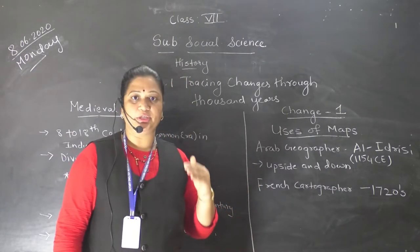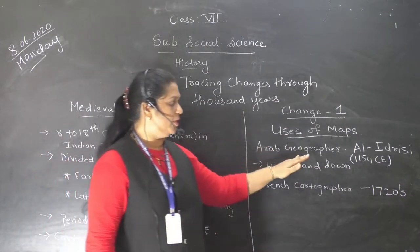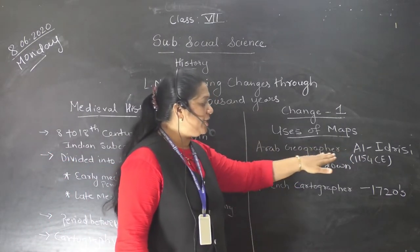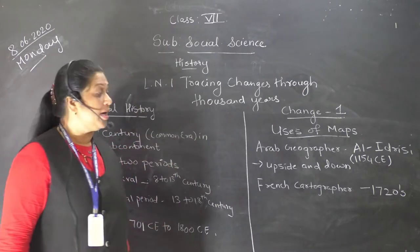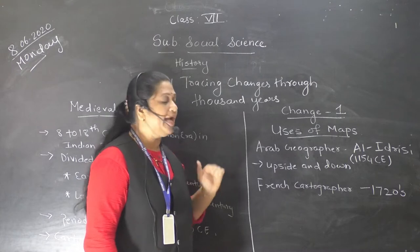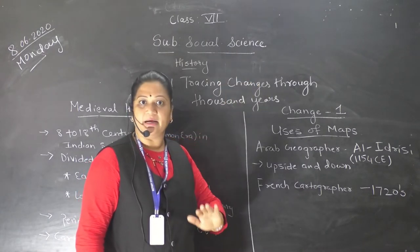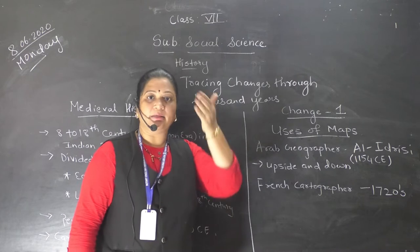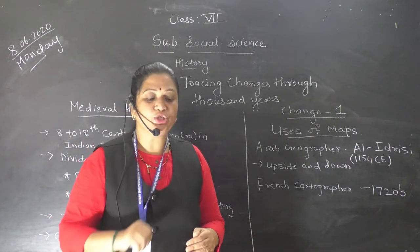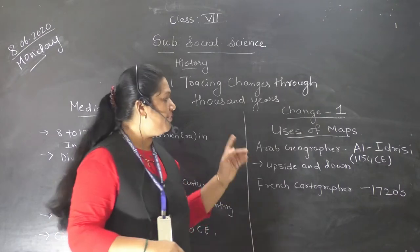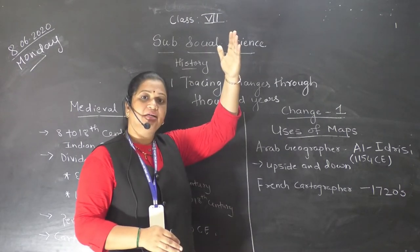The first change we see during this period was in the use of maps. In the map shown, what we expect at the top is actually at the bottom, and Sri Lanka, which is in the south of our Indian subcontinent, is shown at the top. On the next page of your textbook, you will see map number 2, in which Sri Lanka is at the bottom and India is at the top.